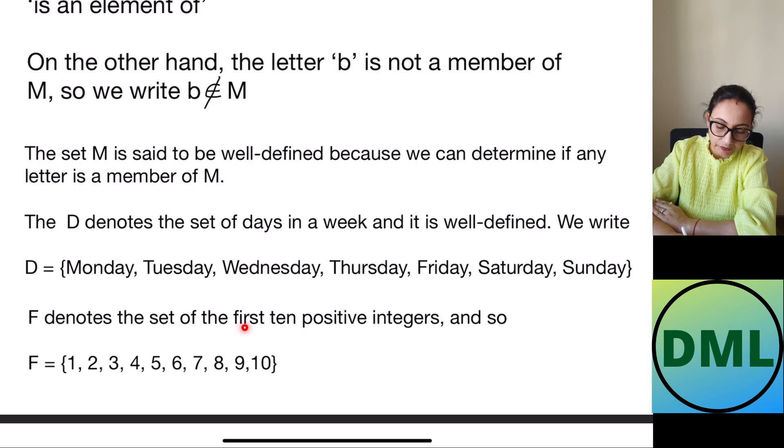If F denotes the set of the first 10 positive integers, positive integers means you have the set F is bracket 1, 2, 3, 4, 5, 6, 7, 8, 9, 10. This is the set of first 10 positive integers and the bracket closed. This is also a well defined set.